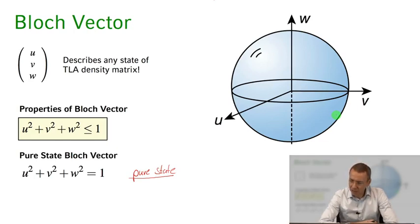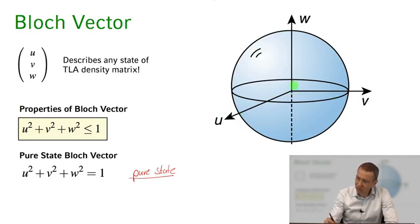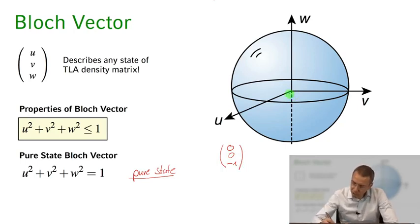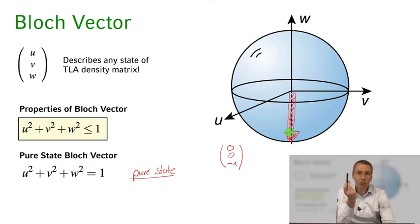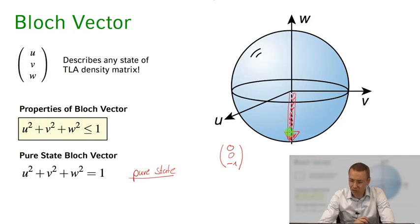We can think of all states of the density matrix as being described within a sphere of unit radius. If the Bloch vector lies on the surface of this sphere, it is a pure state; if it lies within the volume, it is a mixed state. In the coordinate system of u, v, and w, a Bloch vector pointing down corresponds to the atom in the ground state — pointing to the south pole means ground state — while pointing to the north pole means the atom is in the excited state.